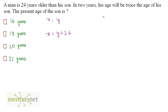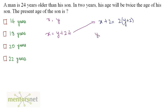So in 2 years, the man's age becomes x plus 2. This will be equal to twice the age of his son. But after 2 years, his son's age will also increase by 2, so twice of y plus 2. We have to find the age of his son, which is y's value. Put the value of x in this equation: y plus 24 plus 2 is equal to 2y plus 4.